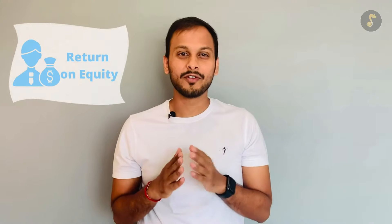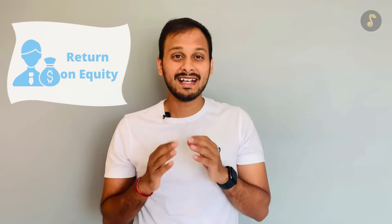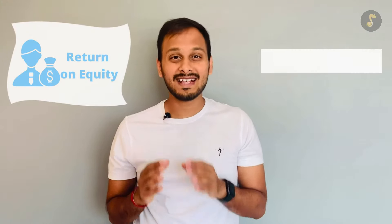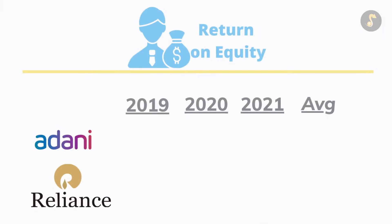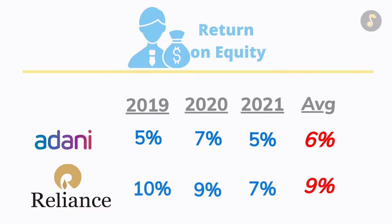Our next parameter is return on equity. The assessment criteria is higher the better. The average return on equity of Adani Enterprises in the last three years has been around 6%, wahi Reliance ka average return on equity is 9%, making it a better performer than Adani Enterprises.